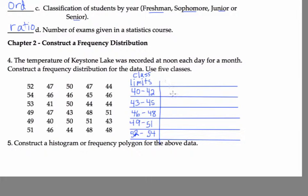In order to find my class boundaries, I will go 0.5 below 40 and 0.5 above 42. So I'll have 39.5 to 42.5 and so on.